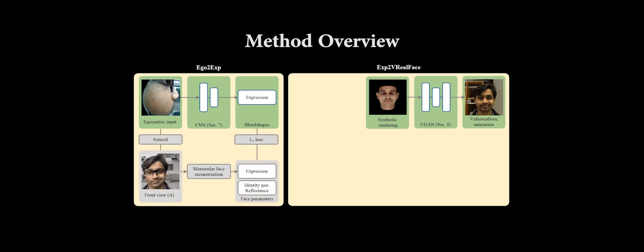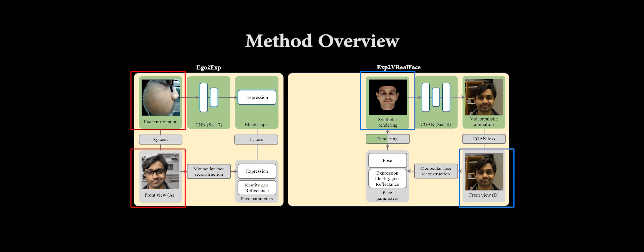The first component is trained using synchronized egocentric and front view images. The second component is trained using pairs of front views and their synthetic renderings. Each component is trained per user. We keep the identity of the user and control the target head pose through a selection block.